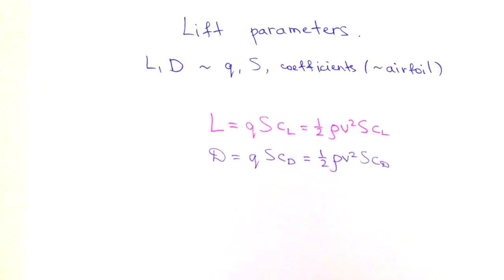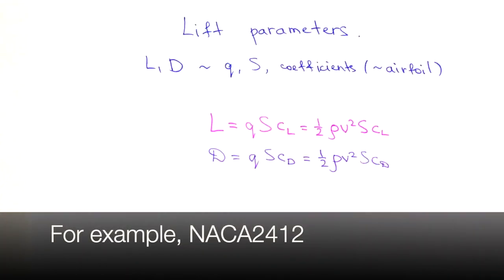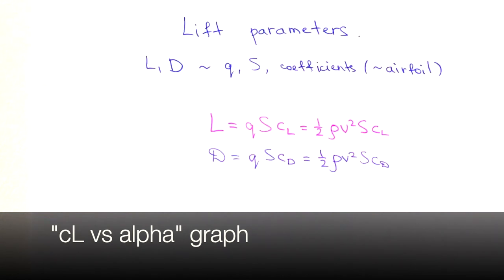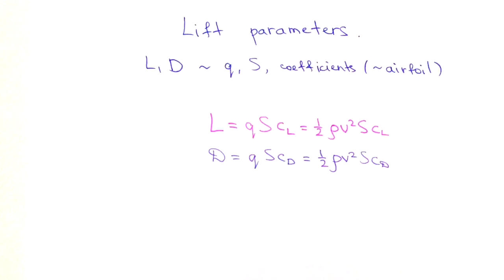Where do we find lift and drag coefficients? You would need to search the internet to find the lift coefficient of a specific airfoil, which are given by sets of numbers and letters we'll cover in a future video. Generally, lift and drag coefficients are measured in a wind tunnel during testing of the airfoil design and given in the wind tunnel testing report. You can also find these coefficients from the graph of lift coefficient versus angle of attack, which we'll discuss shortly.